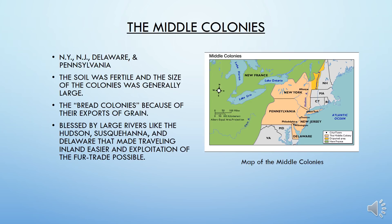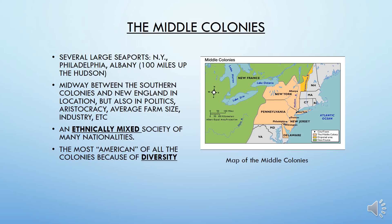Now let's look at the Middle Colonies: New York, New Jersey, Delaware, and Pennsylvania. The soil in this region is pretty fertile and the colonies were very large. We kind of call these the breadbasket colonies. They're blessed by large rivers, which helps with fur trading and agriculture. They have several large seaports including New York City, Philadelphia, and Albany. Located midway between the Southern and New England colonies, they're also middle ground in politics, aristocracy, farm size, and industry. We see these as the most American of the colonies because of their diversity and large ethnic mix.